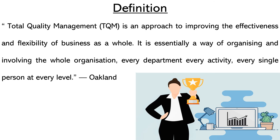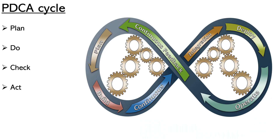Next is the PDCA cycle — Plan, Do, Check, Act. There are various phases in Total Quality Management. Planning is the most important step. In this phase, employees do extensive research.